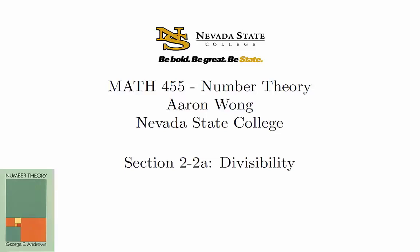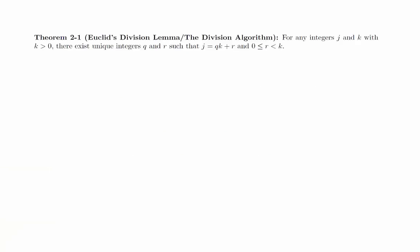Before we begin, let's take a moment to review the division algorithm, which this book calls Euclid's Division Lemma. Theorem: For any integers j and k with k greater than 0, there exist unique integers q and r such that j equals q times k plus r, and 0 is less than or equal to r is less than k. The idea of divisibility follows very naturally from this theorem. The intuitive idea is that divisibility arises when there's no remainder. If we set r equals 0, we get j equals k times q, and we might say k divides evenly into j. In formal mathematics, we've just shortened that language to say k divides j.